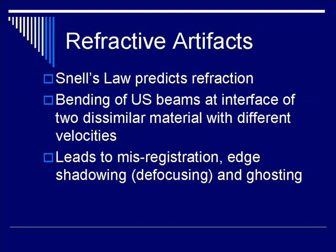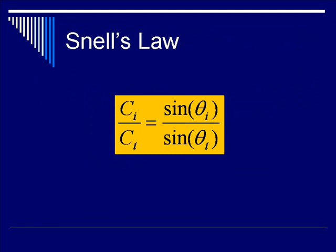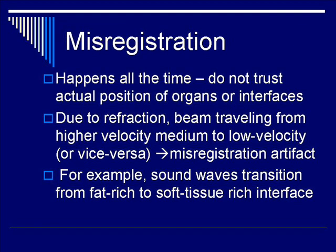Next, we're going to talk about refractive artifacts. Refraction, discussed in the earlier lecture, is encapsulated by Snell's Law, which describes the bending of ultrasound beams at an interface of two dissimilar materials with different velocities. This leads to multiple refractive errors in the form of misregistration, edge shadowing, and ghosting. The first subcategory of refractive error is misregistration.